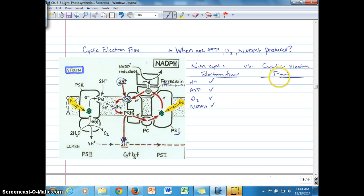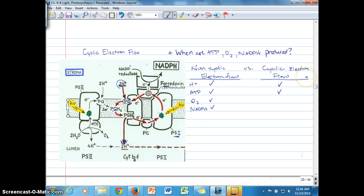When we compare that with cyclic electron flow, the whole idea is to continue to increase the hydrogen ion concentration in the lumen. So we do have hydrogen ion transport into the lumen, and as a result ATP synthesis occurs. Oxygen production is not happening in cyclic electron flow because there's no inclusion of electrons from Photosystem II. And we're excluding ferredoxin from reducing NADP+, which means NADPH is not produced.